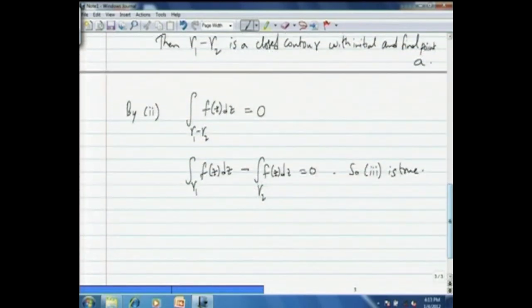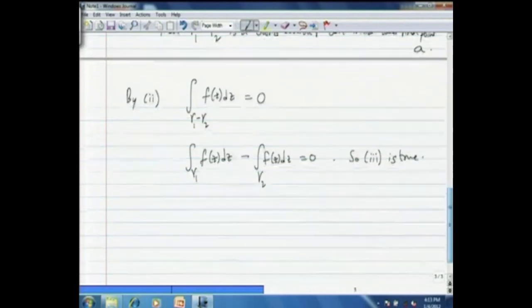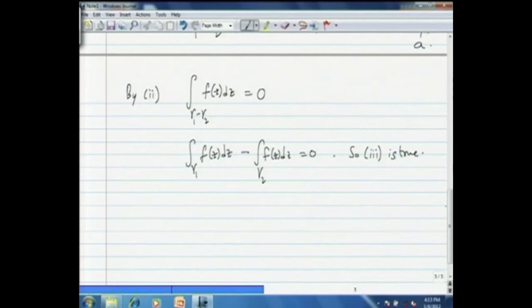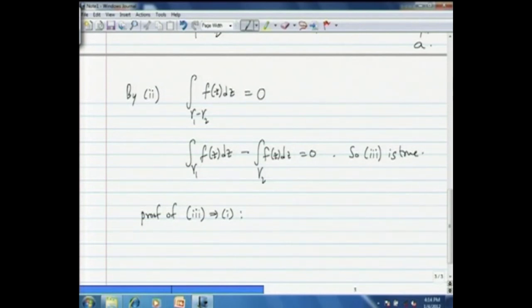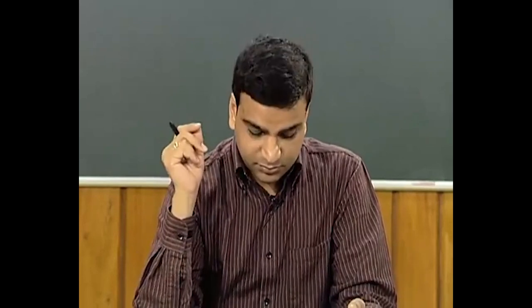That tells us the contour integral does not depend on the path from a to b. That is the proof of 2 implies 3, which is very easy. The more difficult part of this theorem is to prove that 3 implies 1 — that path independence of the contour integral implies the existence of an anti-derivative for the continuous function little f.